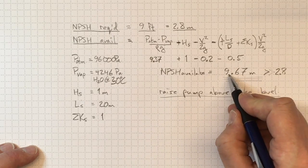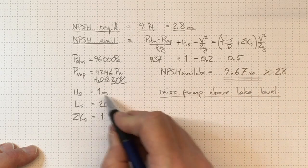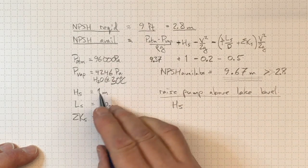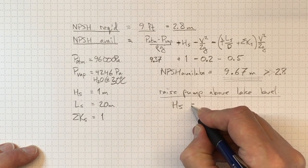We can put our pump above the lake level. So we've got a spare, almost 7 meters there. So we could take HS from plus 1 meter, so a meter below the lake level, to being, say, minus 3.